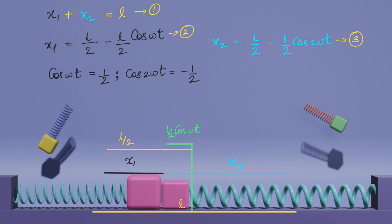Putting equations 2 and 3 in 1, we get cos omega t equals 1 by 2 and cos 2 omega t equals minus 1 by 2. Now let us find the speeds of both the blocks during collision.